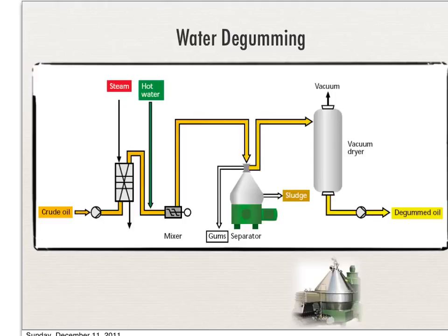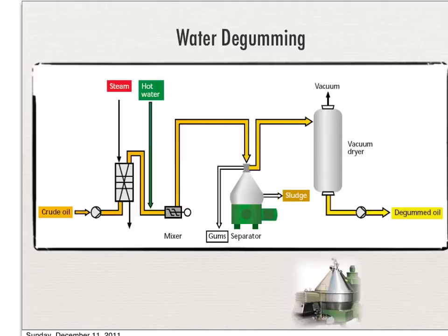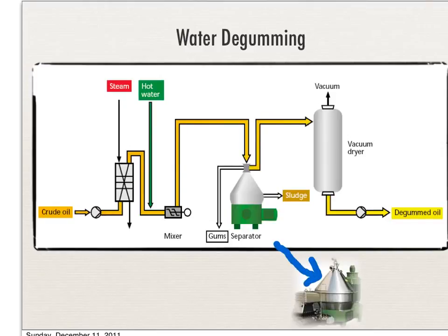Alternatively, if the oil is to be stored for some time, it will go through the drying process in a vacuum dryer to remove as much water as possible — because leaving water inside the oil can cause hydrolysis. The final product at the end of the degumming process is the degummed oil. The picture here shows what the separator looks like.